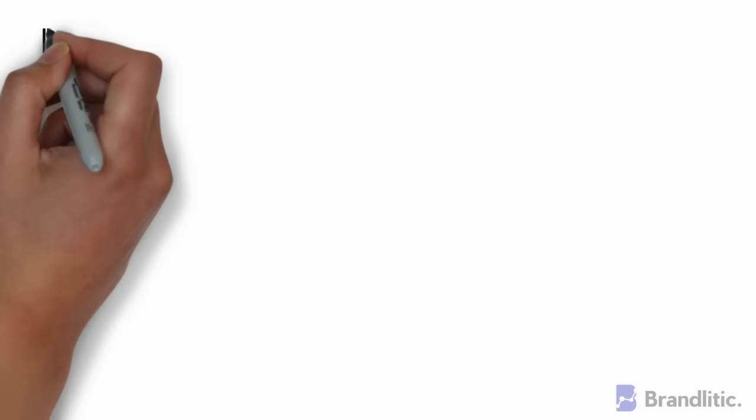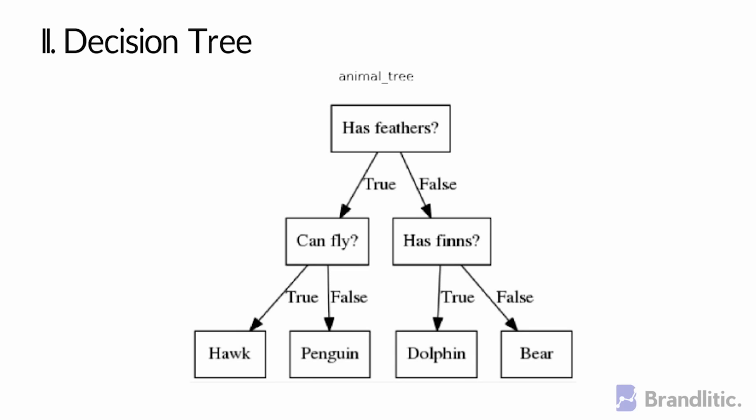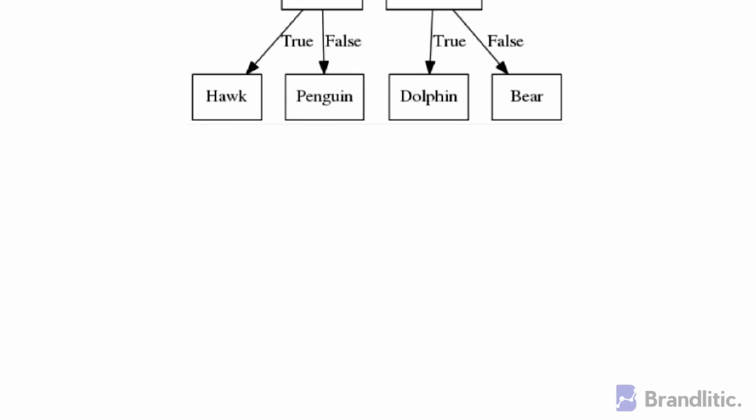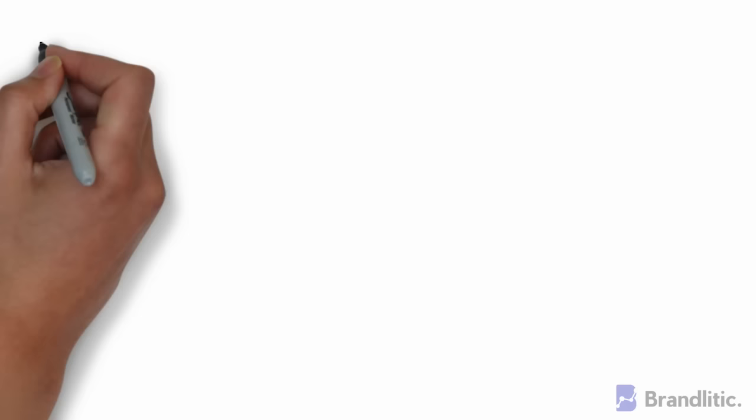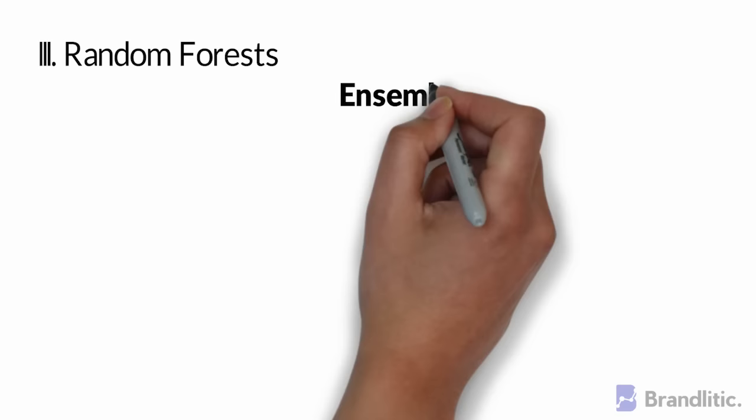Decision tree looks something like this, where each square above is called a node, and the more nodes you have, the more accurate your decision tree will be in general.